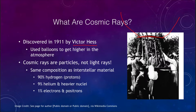Cosmic rays cannot be detected from the surface of the Earth because they are blocked by the Earth's atmosphere. So our atmosphere protects us from being bombarded by these high energy particles. And as specified, they are particles, not light rays, as the other types of electromagnetic radiation that we have studied in the past.